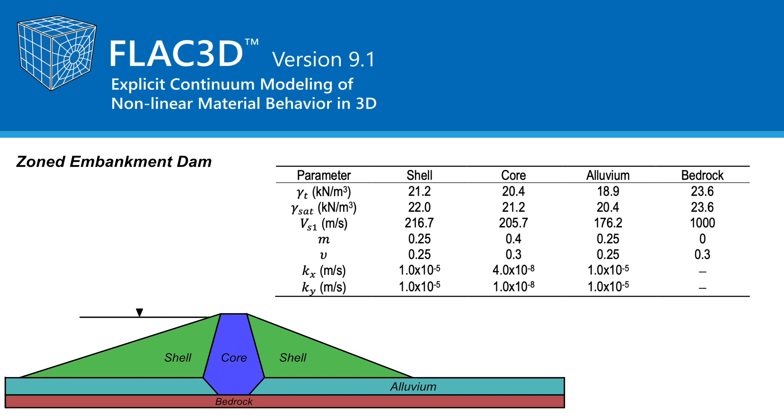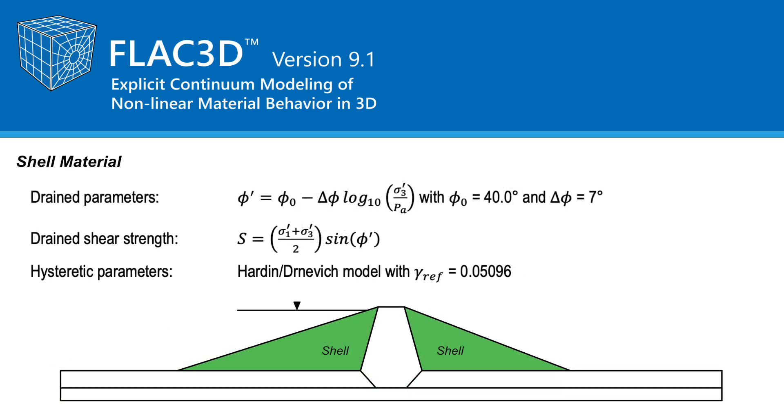The shell material is modeled to behave drained before and during earthquake shaking. The drained shear strength is selected to relate only to the drained friction angle, representative of a gravelly shell that varies with minimum principal effective stress as shown. The associated drained shear strength assigned in the model is calculated using the equation S equals maximum principal effective stress plus minimum principal effective stress divided by 2 times the sine of the drained friction angle. Note that this shear strength S will be equal to the cohesion parameter in the Mohr-Coulomb model and will be calculated zone by zone based on the pre-earthquake state of stress. Correspondingly, the friction angle parameter in the Mohr-Coulomb model is set to 0. The Hardin-Drnevich model was chosen for the hysteretic model and Gamma-Ref set equal to 0.05096 to capture the EPRI 1993 g over g max in damping curves that represent depths between 6 and 15 meters.